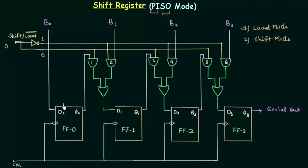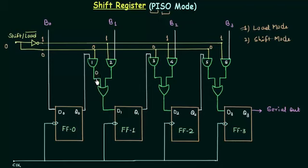For AND gate number 1, the first input is 0; for AND gate number 2, the first input is 1. Similarly, gate 3 has 0, gate 4 has 1, gate 5 has 0, and gate 6 has 1. The other input to AND gate number 1 is Q0, so the output is 0 because Q0 AND 0 gives 0. For AND gate number 2, the other input is B1, so 1 AND B1 gives B1. Similarly, we get 0, B2, 0, and B3 as outputs of gates 3 through 6.